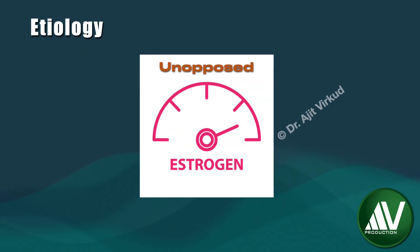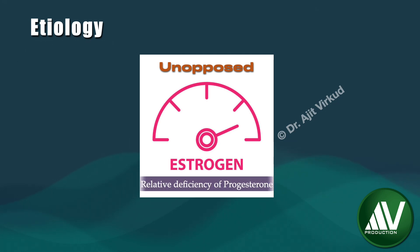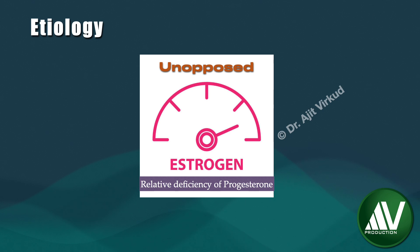The etiology of this condition is fairly straightforward. It is caused by unopposed estrogenic stimulation of the endometrial tissue with a relative deficiency of the counterbalancing effects of progesterone. The end result of this continuous estrogenic stimulation is endometrial hyperplasia.